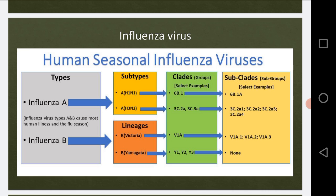Influenza A subtypes — which have been discussed in the epidemiology section — include A H1N1 and A H3N2. Influenza type B has two subtypes: B Victoria and B Yamagata. The most common subtypes are the influenza A subtypes, A H1N1 and A H3N2.